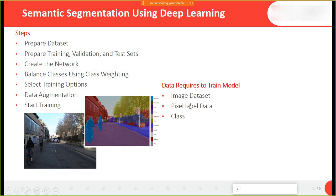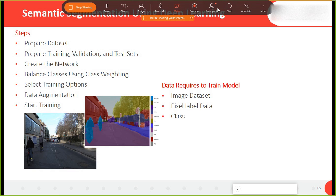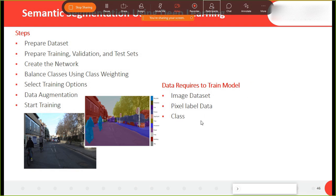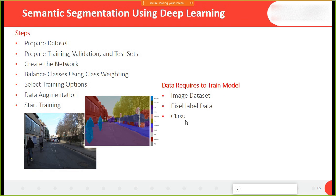To create this pixel-level data you can use labeler apps in MATLAB. The image will be the input, pixel-level data will be the output, and classes will be required to visualize based on color — showing what is in front of the camera.